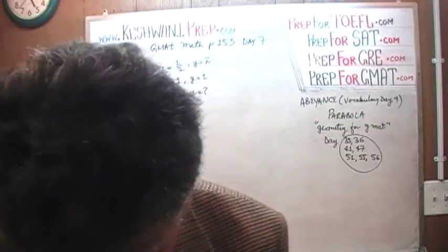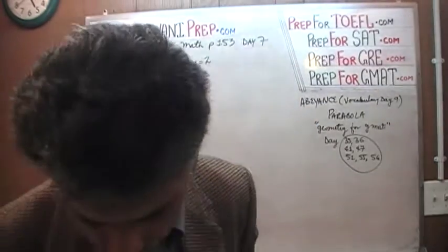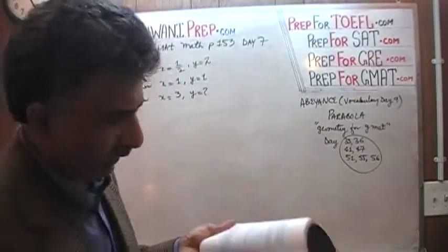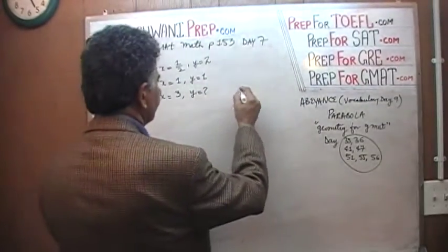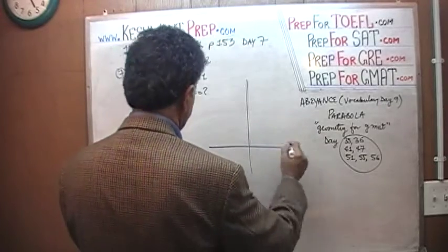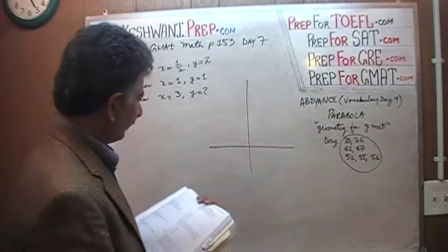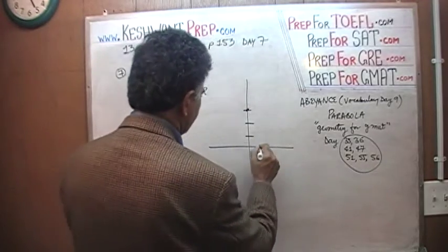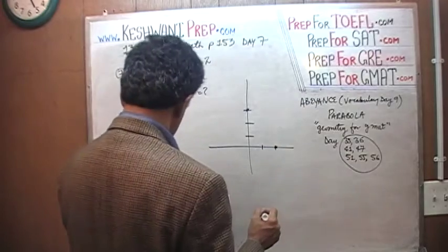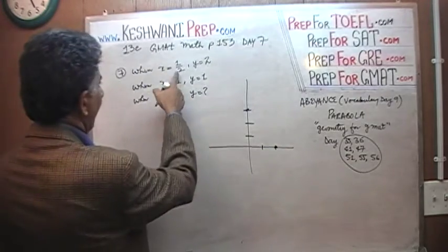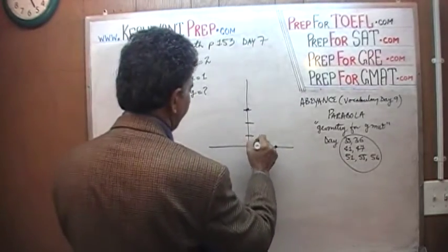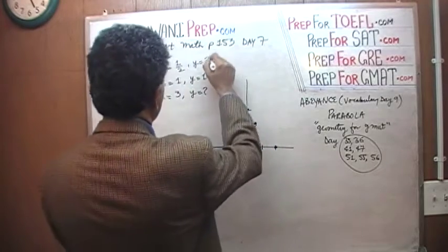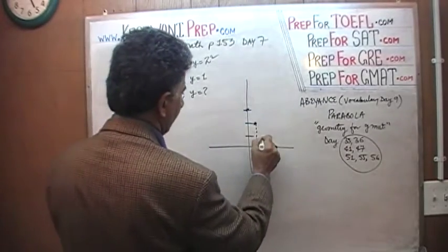We are given a graph. Let me reproduce it. When x is 0, y is 3. When x is 2, y is 0. When x is one-half, y is 2. When x is 1, y is 1.